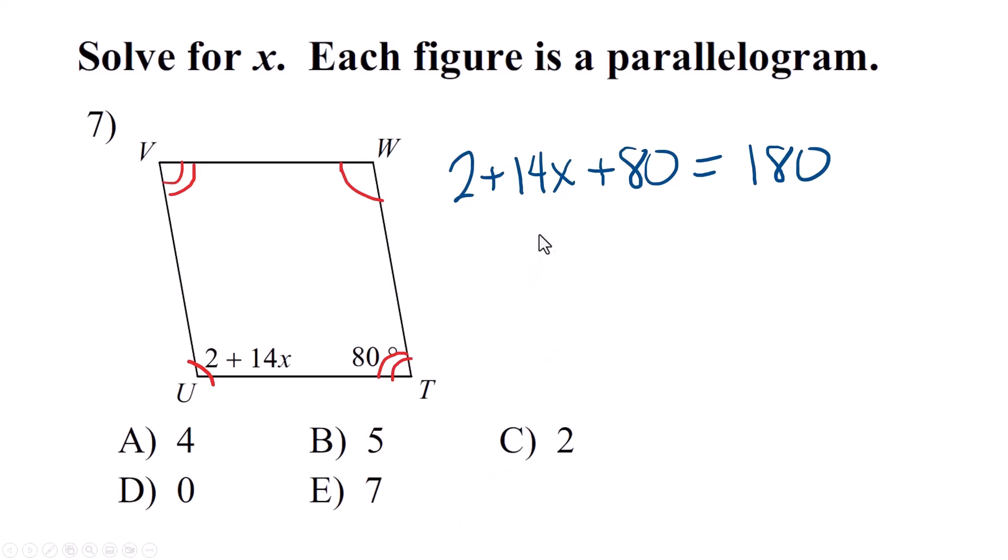So the 2 plus 14x plus 80 is going to equal 180. And now we have an algebra equation to solve. Algebra. 14x plus 82 is 180. I subtracted 82 from both sides. 14x equals 98. And divide. X equals 7. Kaboom. The answer is E.